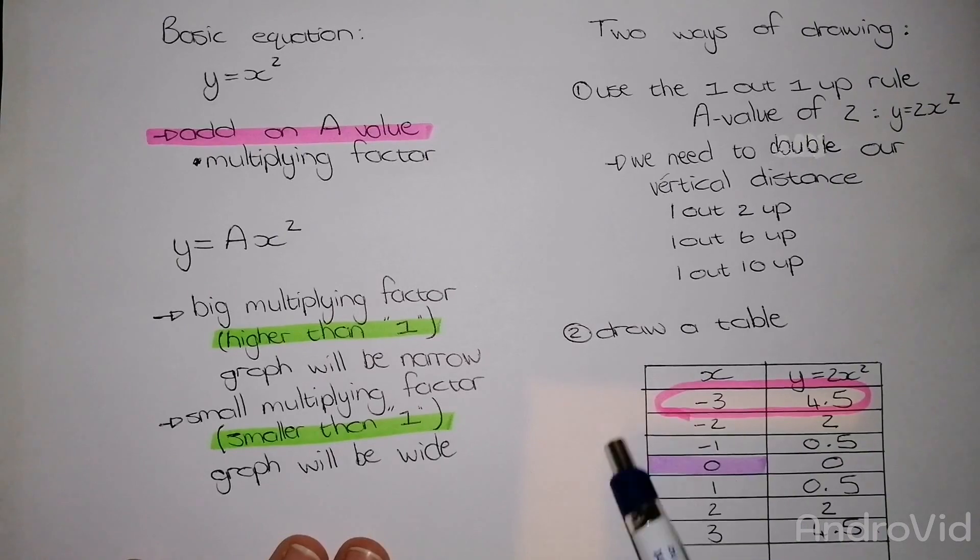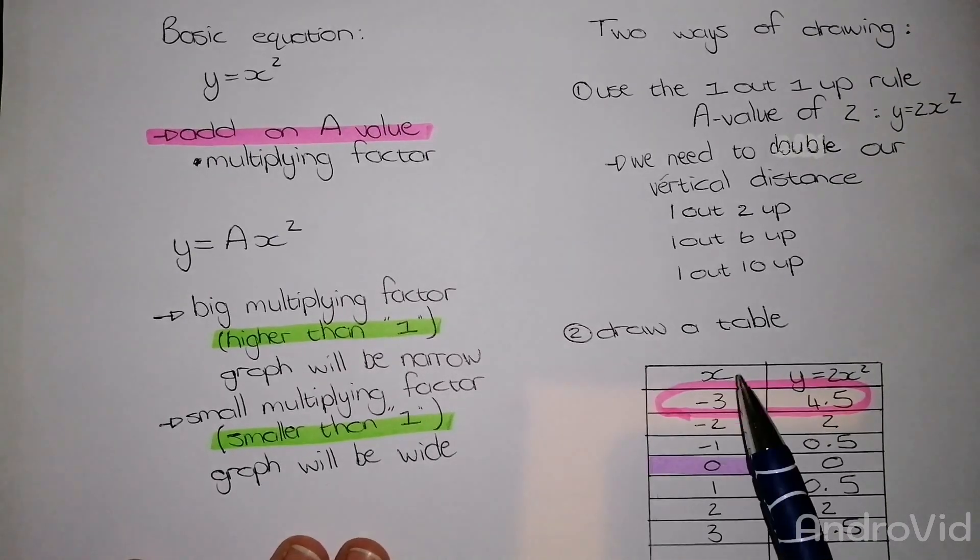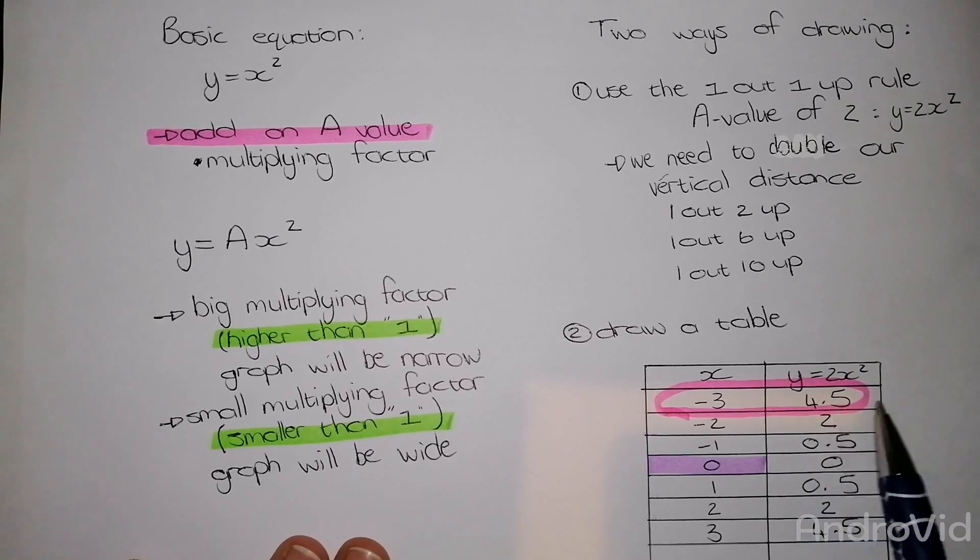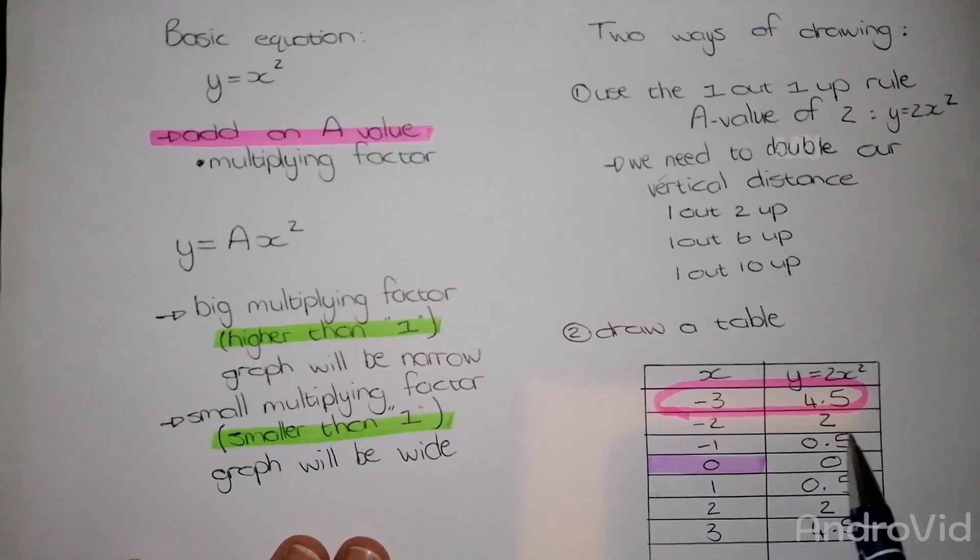Now that I have completed my table, each of these, my x value and my y value forms a coordinate. Each row is a new coordinate.